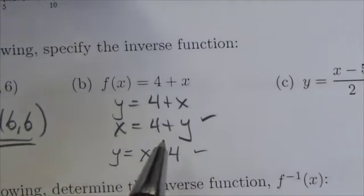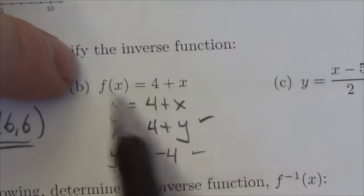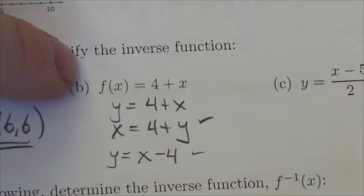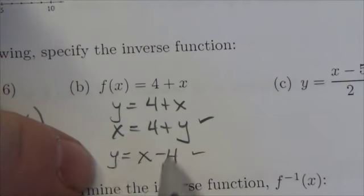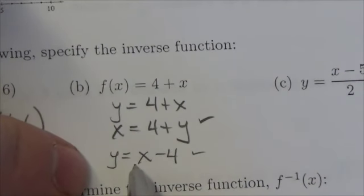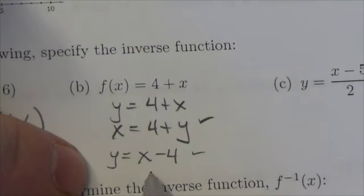Now notice that in this case right here, the original function was a line with a slope of 1, a y-intercept of 4. This one's got a slope of 1 with a y-intercept of negative 4.